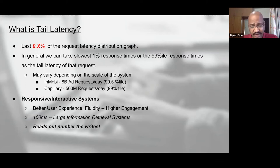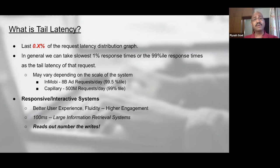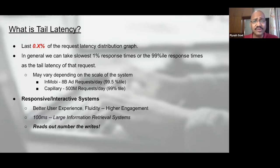Now that we understand percentile latency, what exactly is tail latency? Tail latency refers to the last 0.x percent — or x percent — of the request latency distribution in your system. Typically we talk about the slowest 1% of response times, or the 99th percentile response times, as the tail latency of any system.